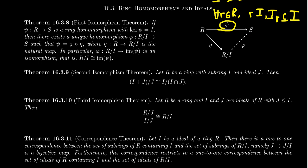A commutative diagram means that no matter which path you take, it's the same result. You could take the direct path from R to S, or you could take a detour through the quotient ring R mod I and use that detour to get to S. Given any ring homomorphism, you have this unique homomorphism from R mod I to S that allows the diagram to be commutative. The first isomorphism theorem is extremely important in group theory, and it's also important by analogy in ring theory. A lot of proofs involving quotient rings utilize the first isomorphism theorem.